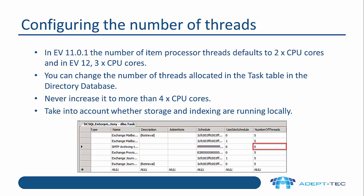In the screenshot, the thread count is set to zero, which means it's using the default value. You should never increase it to more than four times the number of CPU cores, and if the number is greater than 50 it will be ignored. Also take into account whether storage and indexing are running locally on the Enterprise Vault server before increasing item processor threads — you don't want lots of threads allocated to archiving but not enough for storage and indexing, as that will cause bottlenecks in those processes.